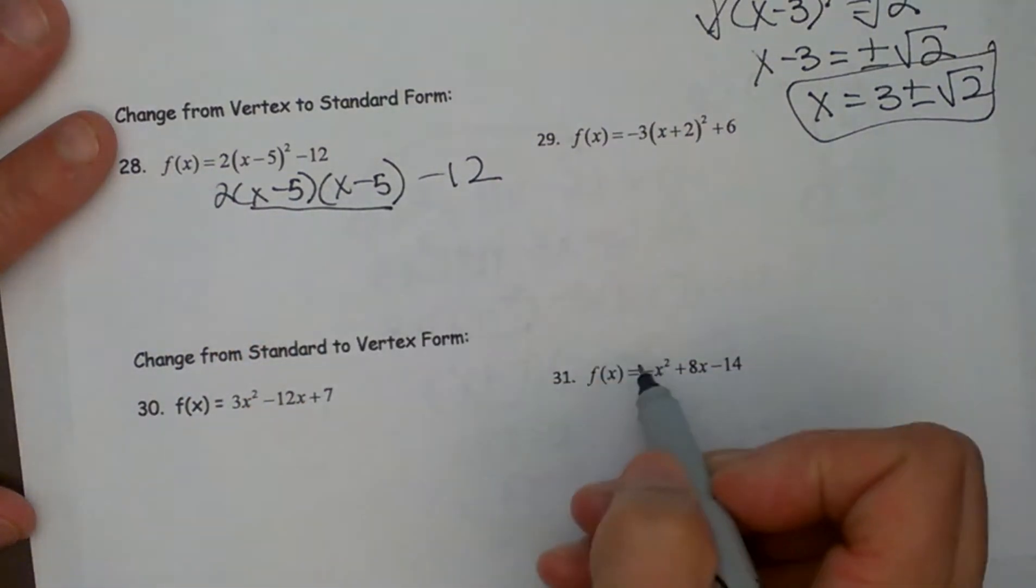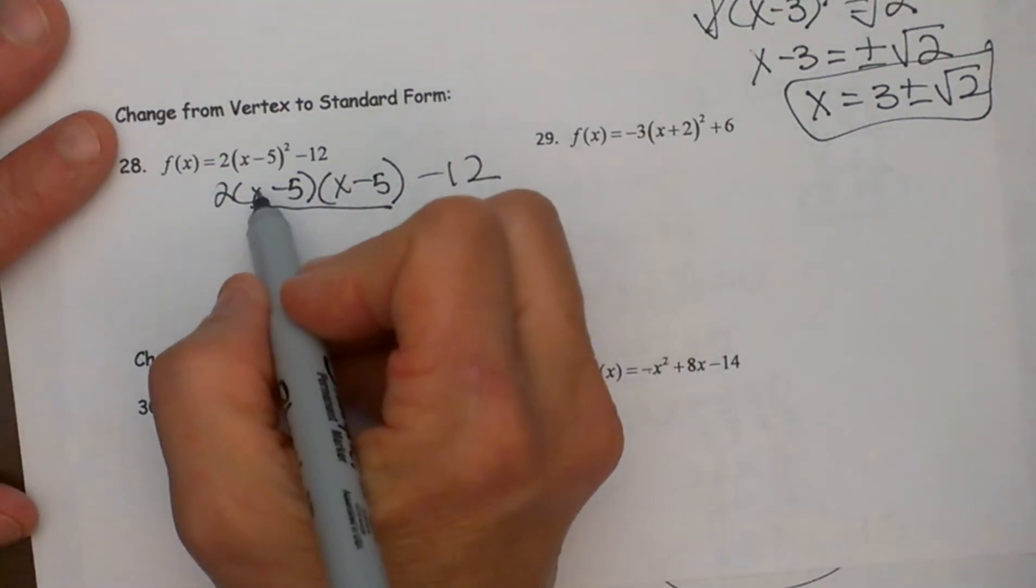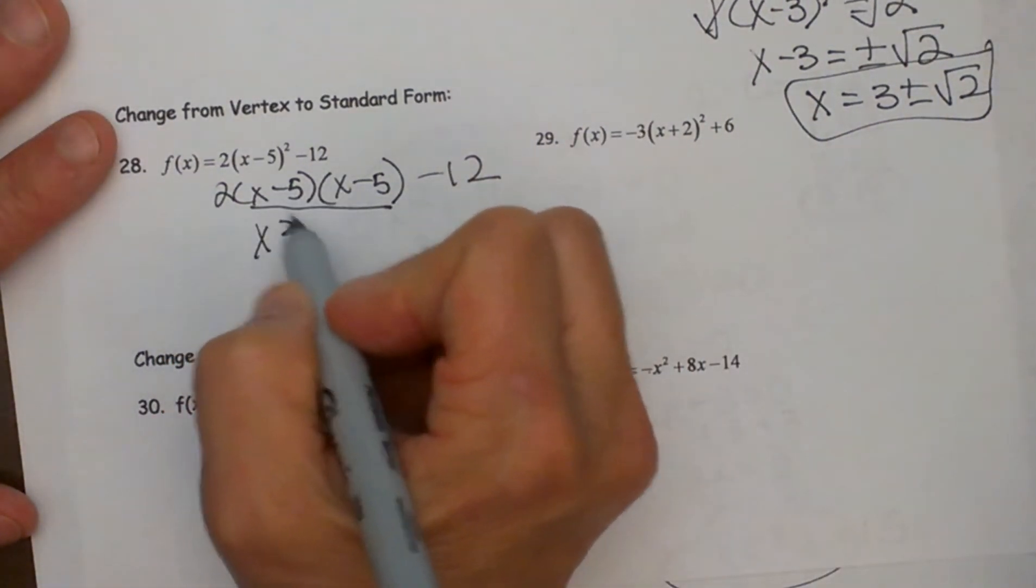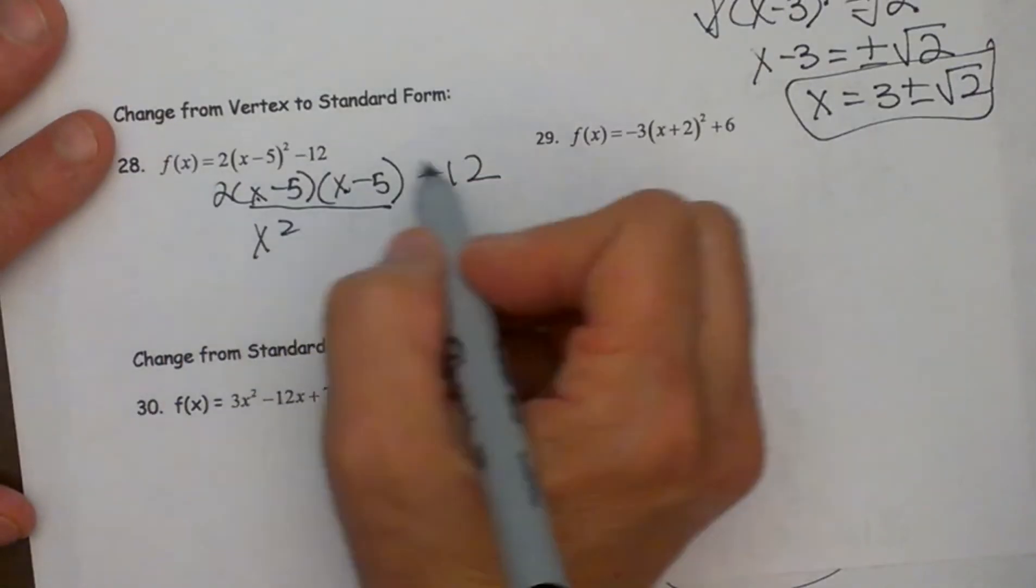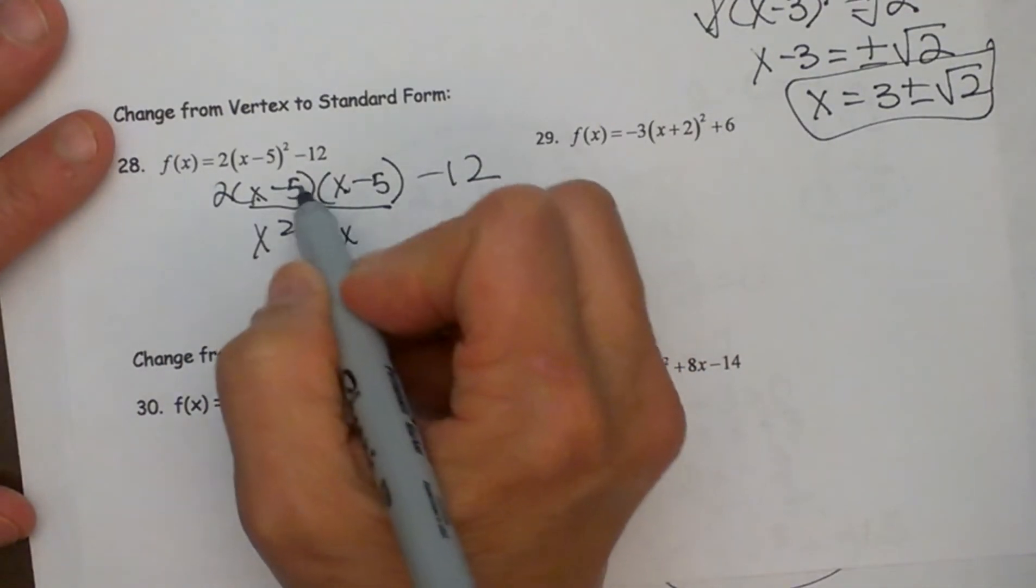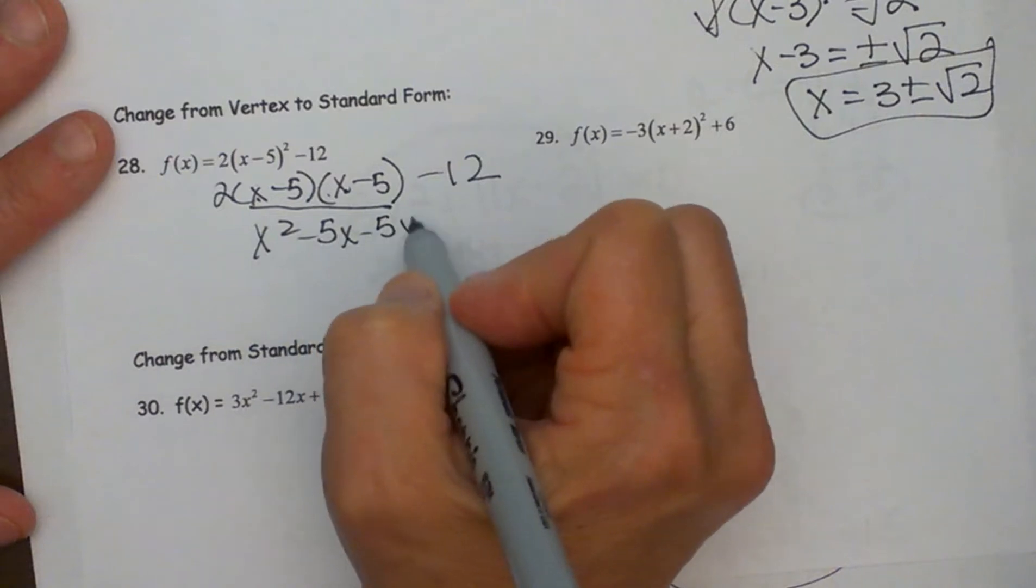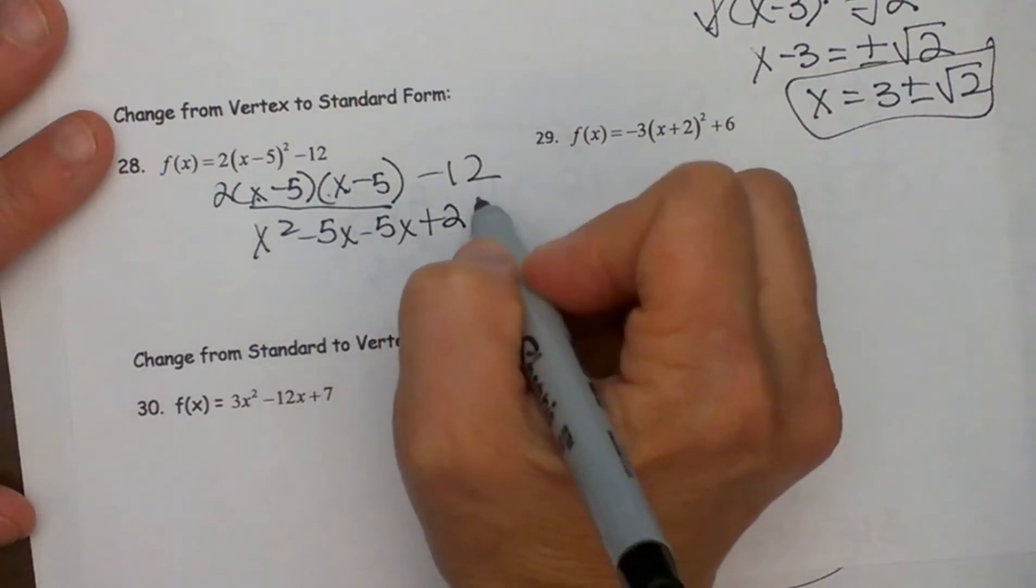I am going to just work on this middle part first. I am going to FOIL that out. So I am going to do first x times x is x squared, outer negative 5x, inner negative 5x and last is positive 25.